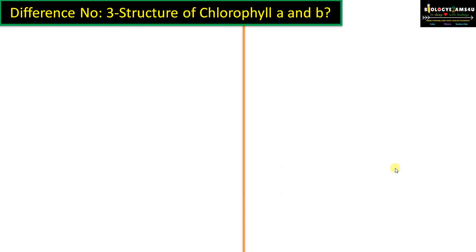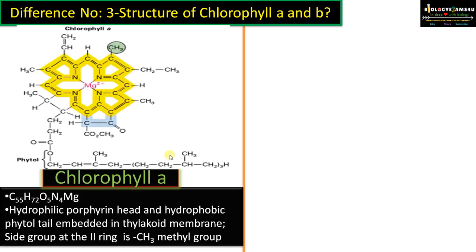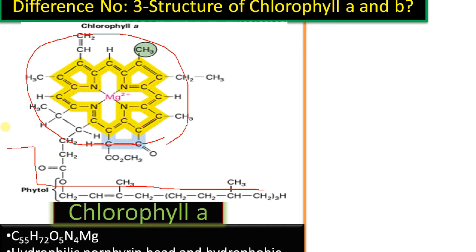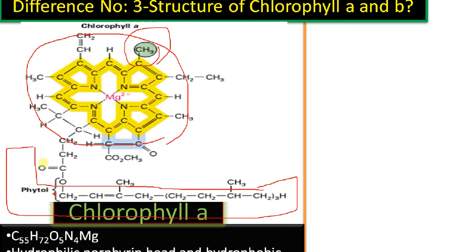Difference number three: regarding the structure of chlorophyll A and B. The chemical formula of chlorophyll A is C55H72O5N4Mg. The chlorophyll molecule has a porphyrin head, which is the light-receiving region having a central magnesium with four nitrogen atoms inward, and four pyrrole rings which are hydrophilic. In the case of chlorophyll A, the side chain of the second pyrrole ring has a methyl group. There is also a phytol tail, which is hydrophobic and is embedded in the thylakoid membrane.